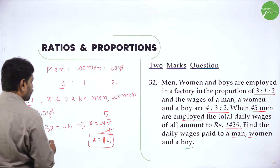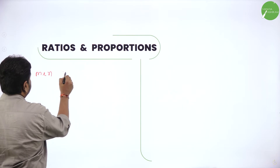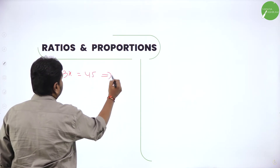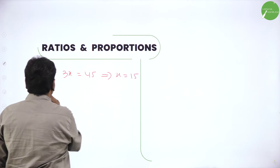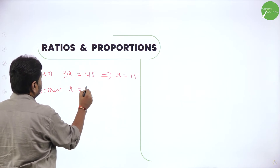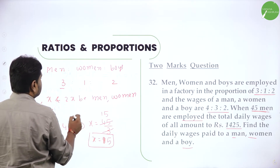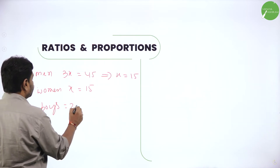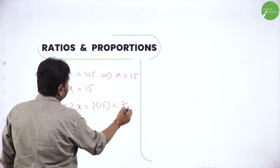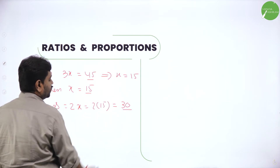From this, men is 3x which is 45 as given. Women is 1x. We got x value as 15, so women is 15. And boys — boys ratio is 2, so 2x means 2 into 15. 2 into 15 is 30. So men 45, women 15, and boys 30.